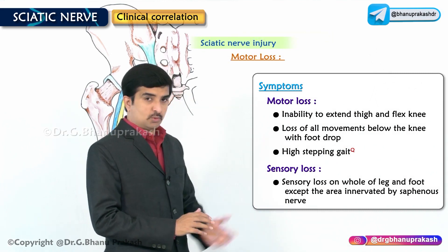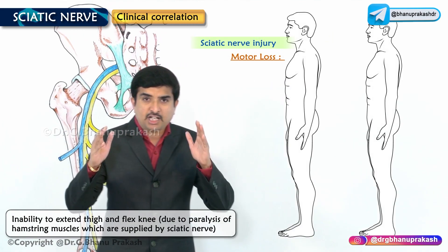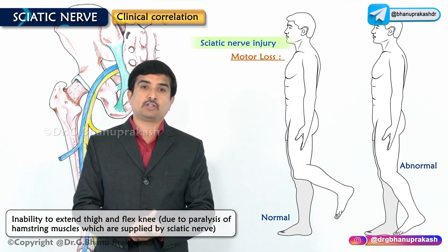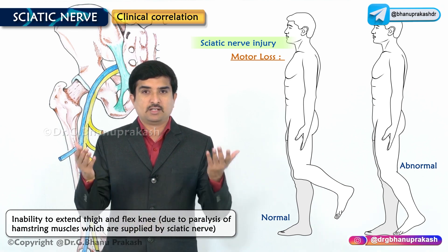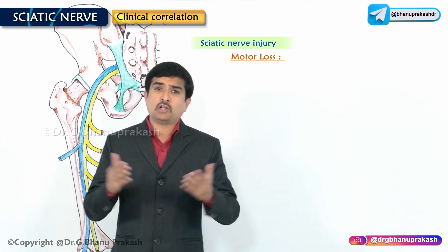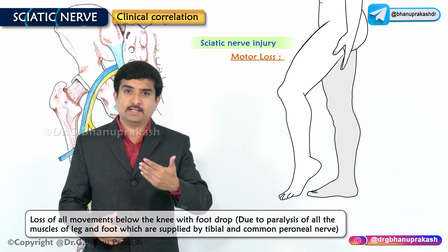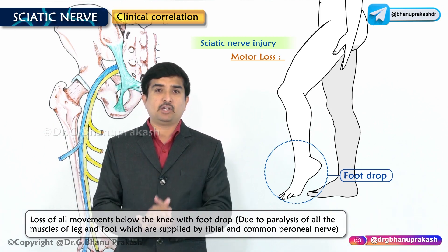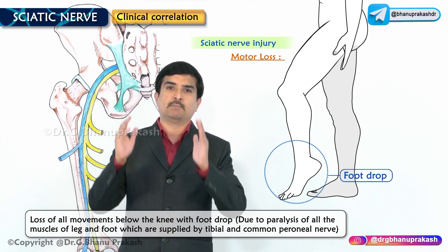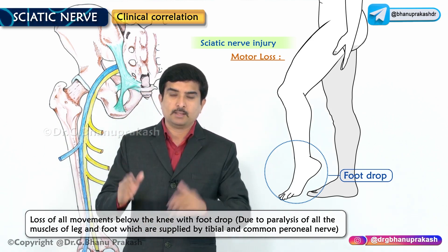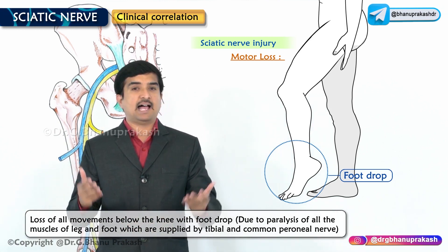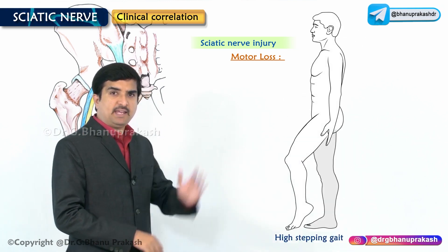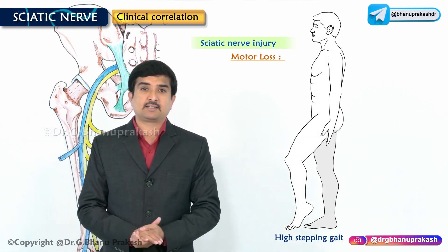Regarding motor loss, there is inability to extend the thigh and flex the knee, mainly due to paralysis of the hamstring muscles supplied by the sciatic nerve. There is also loss of movements below the knee, and foot drop is seen due to paralysis of all the muscles of the leg and foot supplied by the tibial and common peroneal nerves. A high stepping gait is also seen in this condition.